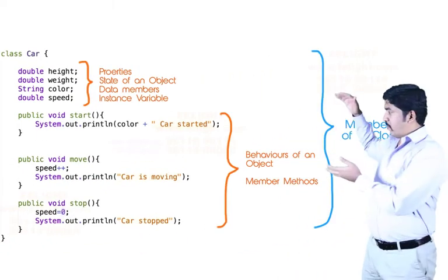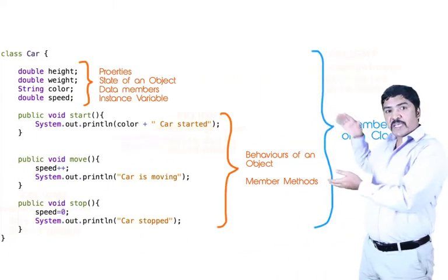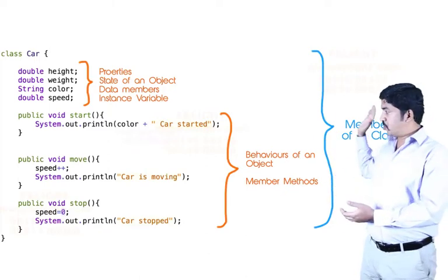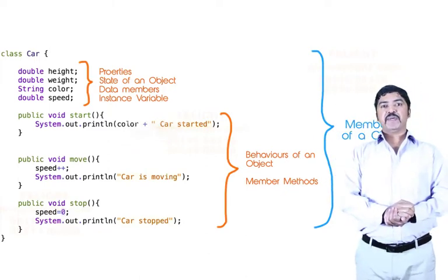...we're talking about both properties as well as behaviors. Together, we can call them members of a class. Is it clear? Suppose if we have any member that is basically a static member, then we don't...